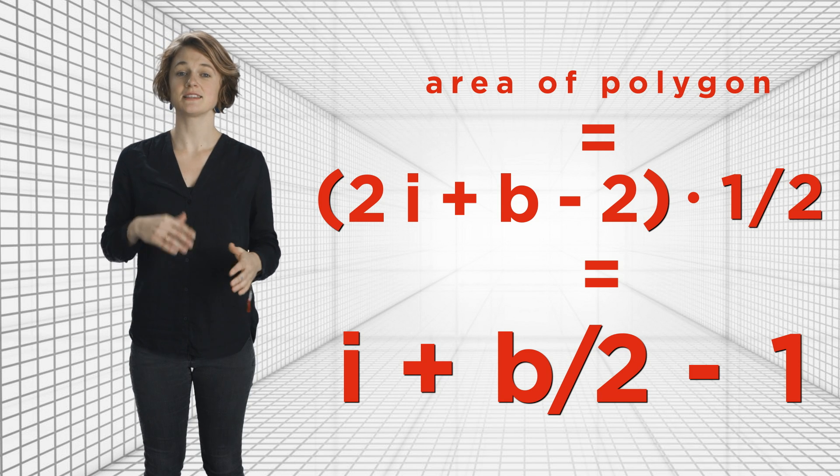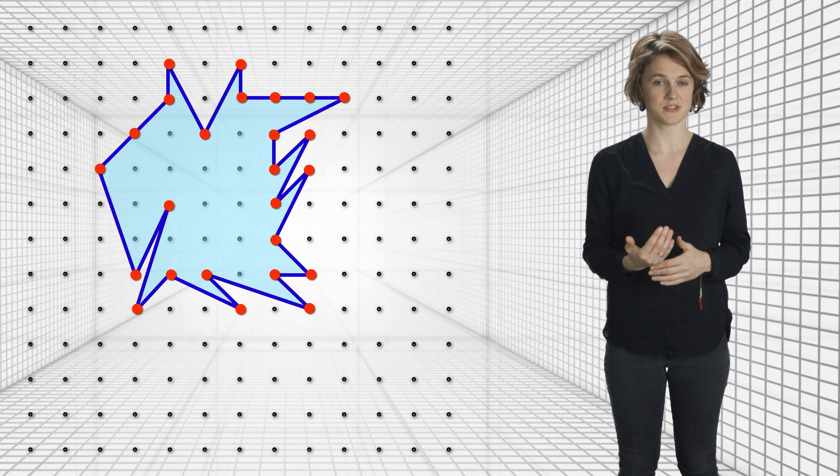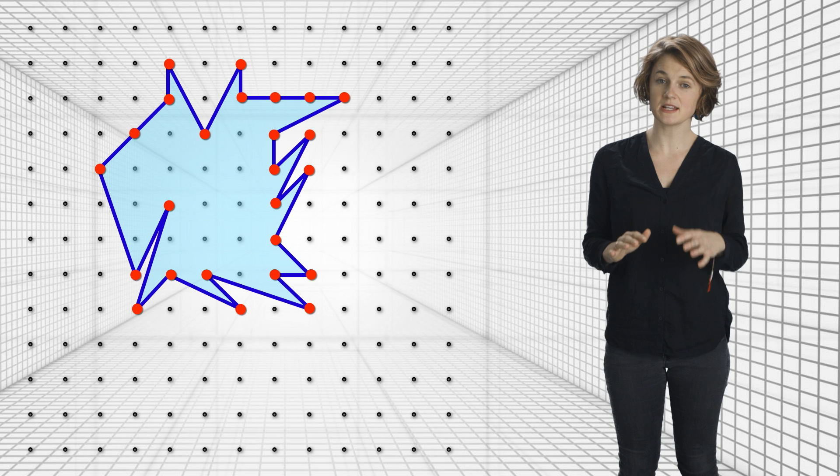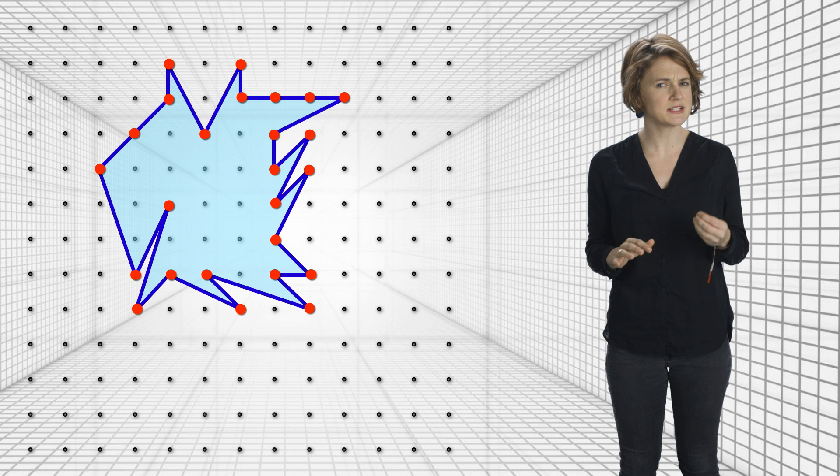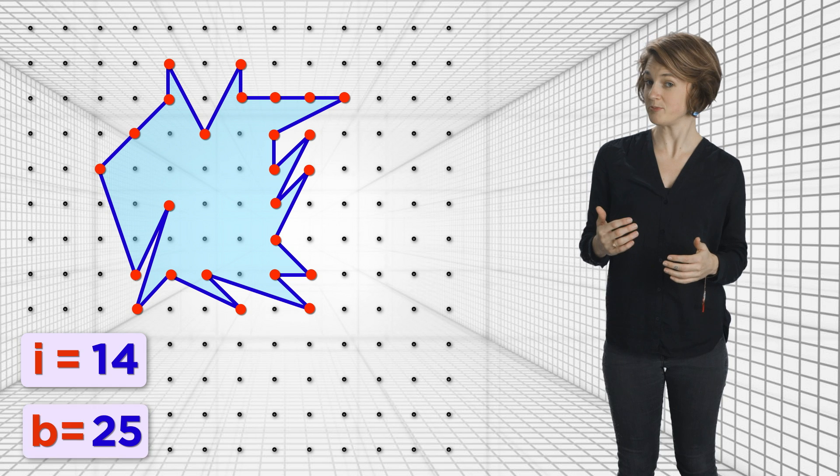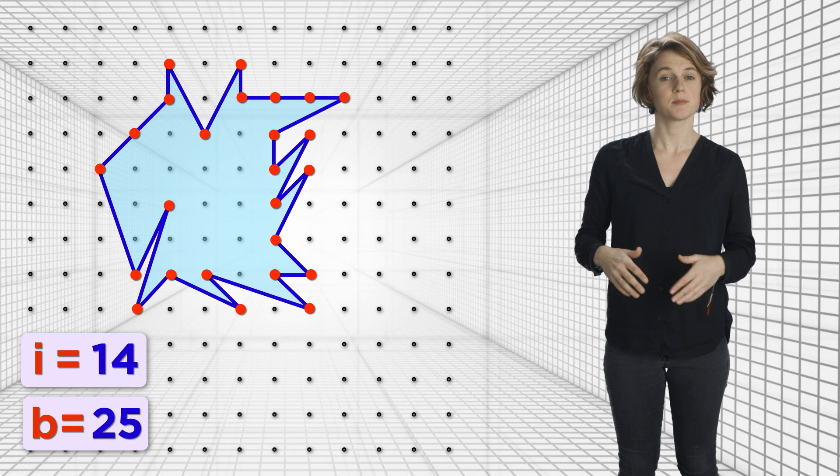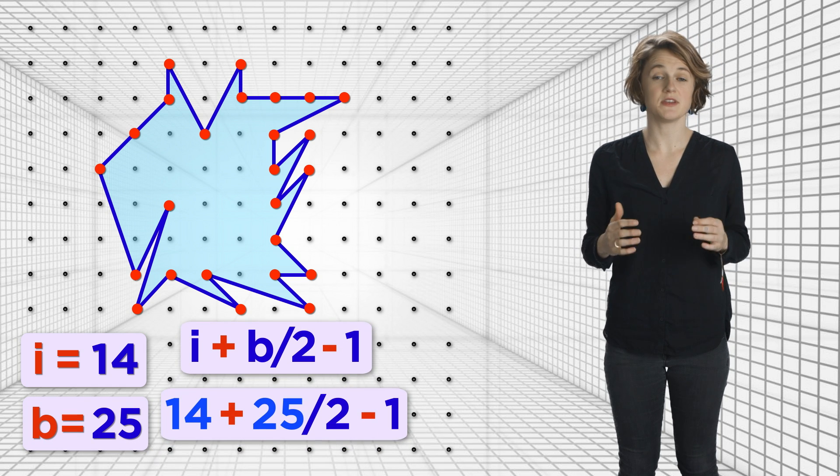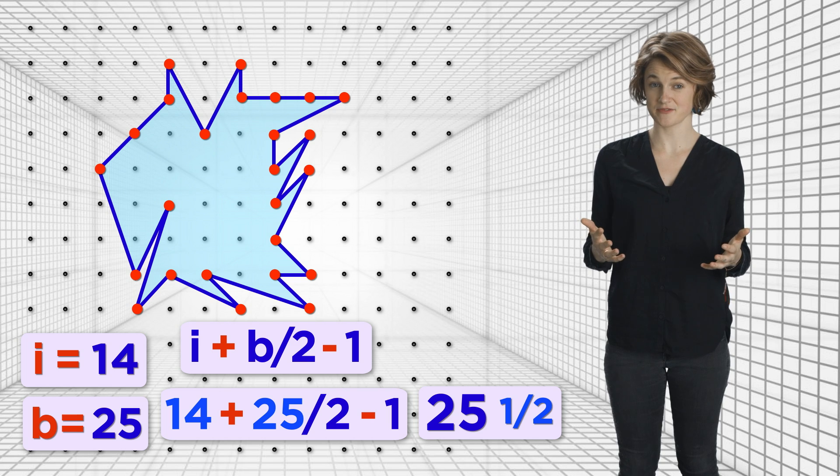Now, let's go back to the original shape, this one. There are 14 interior vertices and 25 vertices on the boundary. So i equals 14 and b equals 25. Plugging this into Pick's theorem, the area is 25 and a half. Easy.